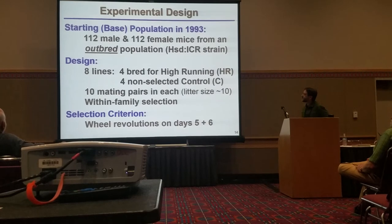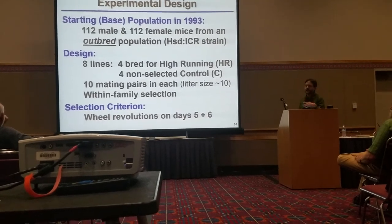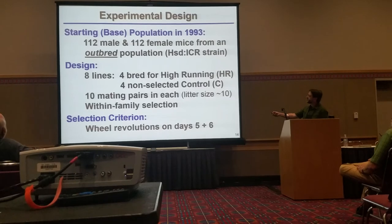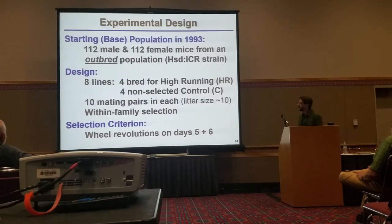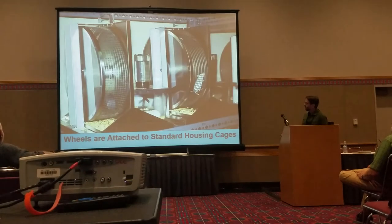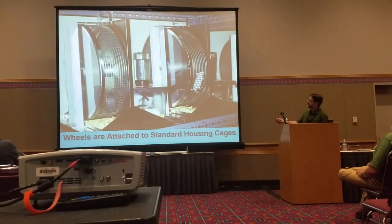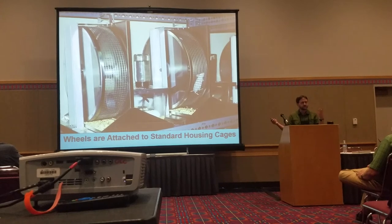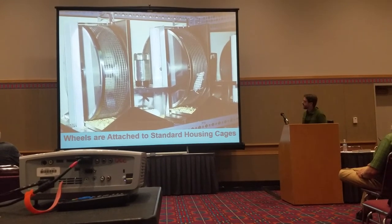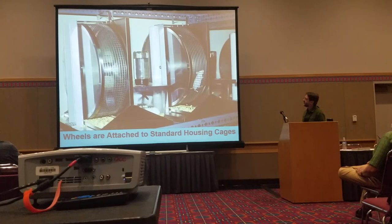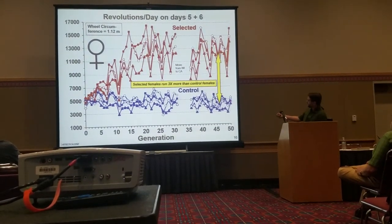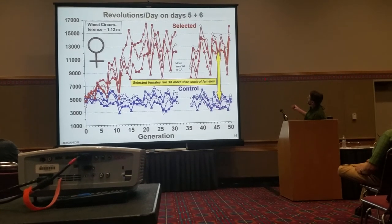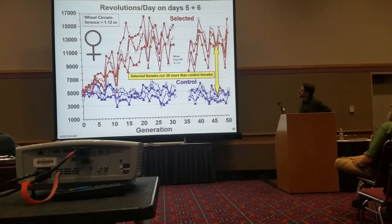We started with 224 mice from an outbred strain, randomly mated them for a couple of generations, then split them up into eight lines. Four lines are selected for high running, and four are non-selected controls for random genetic drift. The selection criterion is how much they run on days five and six of exposure to rat-sized wheels — the mice choose how much they run, the computer records data every minute, and we pick based on running on days five and six. This shows the experiment worked — this is the first 50 generations, we're now at 81. You can see it worked: they reached the selection limit, with about a threefold difference in running in both sexes.